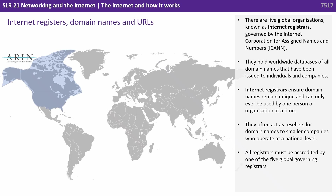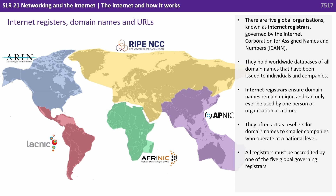There are five global organisations known as internet registrars, governed by the Internet Corporation for Assigned Names and Numbers, or ICANN. They hold worldwide databases of all domain names that have been issued to individuals and companies. Internet registrars ensure domain names remain unique and can only ever be used by one person or organisation at a time.